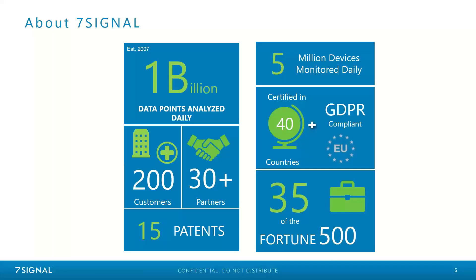A little history on 7Signal — we were established in 2007 in Helsinki, Finland, and are now located in Cleveland, Ohio. We're really proud of all the major milestones we've hit: 1 billion data points analyzed daily, 5 million devices monitored daily, over 200 customers, over 30 partners, and 15 patents — which shows that the technology you see from 7Signal you're only going to see from 7Signal.